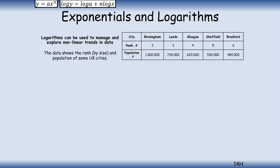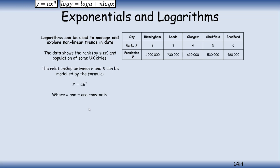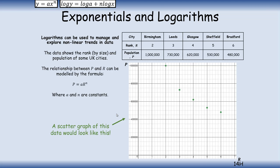For our example, we're looking at some cities in the UK — Birmingham, Leeds, Glasgow, Sheffield, and Bradford — ranked by population. We can model this with the formula p equals a times r to the power of n, where a and n are both constants. Drawing a simple scatter graph, you can see there's a slight exponential curve.